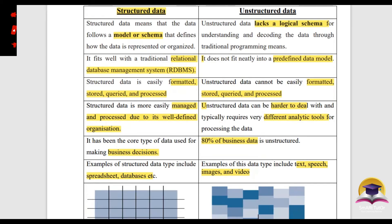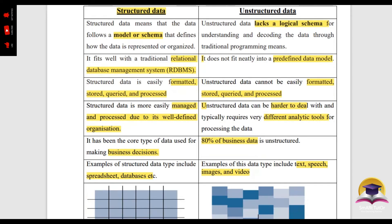You can write about 3 to 6 points. One point: structured data follows a model or schema. Unstructured data lacks a logical schema. Understanding and decoding data through traditional programming means is not possible for unstructured data. Structured data fits with traditional RDBMS; unstructured data does not fit into a predefined data model. Structured data can be easily formatted, stored, queried, and processed. Unstructured data cannot be easily formatted, stored, queried, and processed.